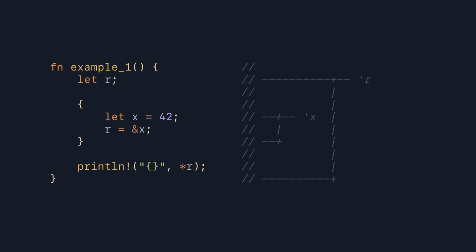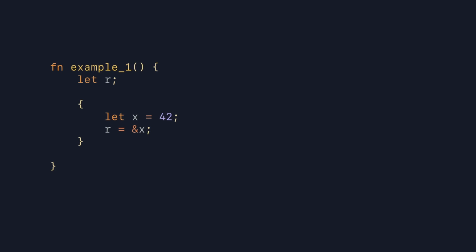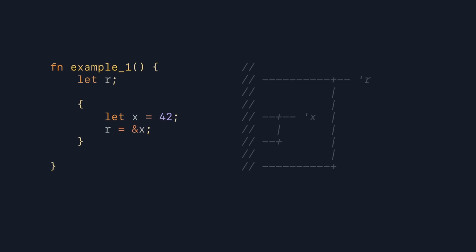There's just one problem with this explanation. If we remove the call to print, this code is now valid, even though r still points to x in the outer scope. However, because r is not actually used there, this is not an issue. The problem is, if we look at the lifetimes of the variables again, these haven't actually changed. r still lives longer than x, so what's wrong?